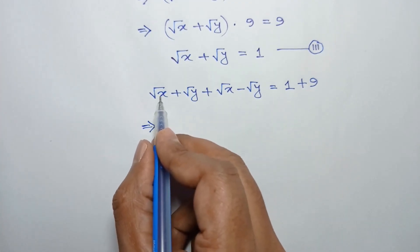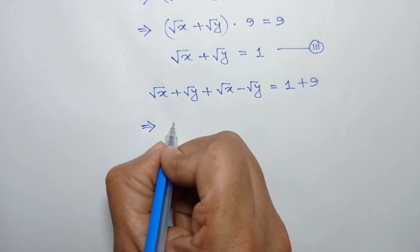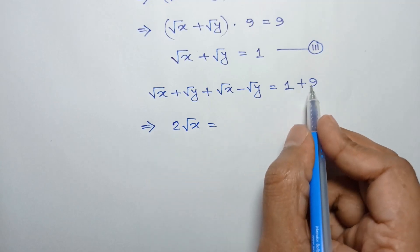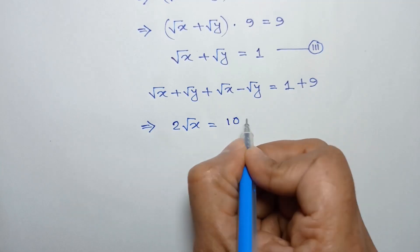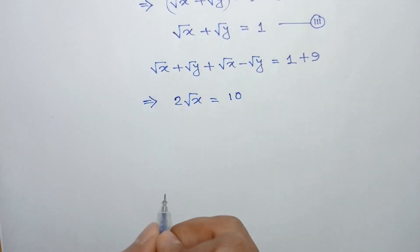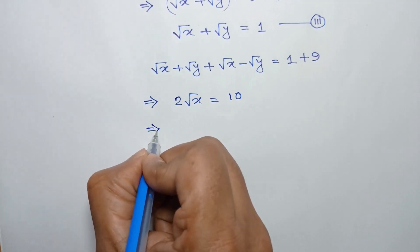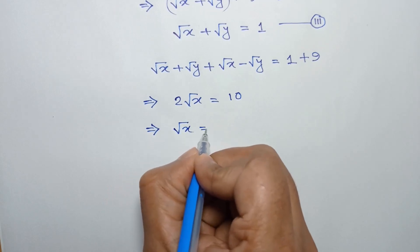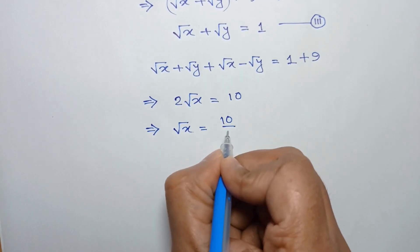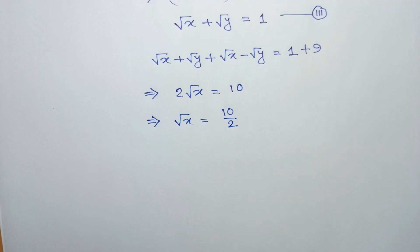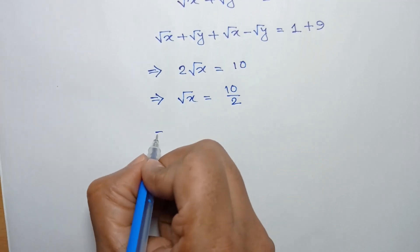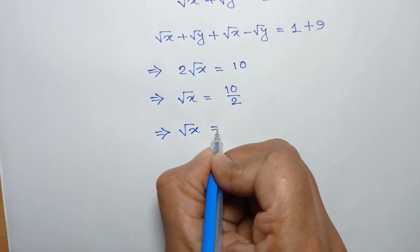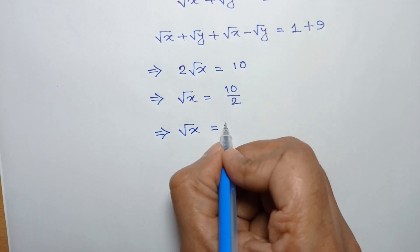The square root of y terms cancel out, leaving 2 times square root of x equal to 1 plus 9, which is 10. Dividing both sides by 2, we get square root of x is equal to 10 over 2, which is 5.